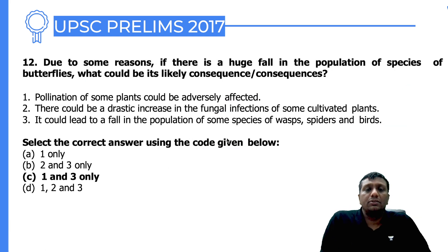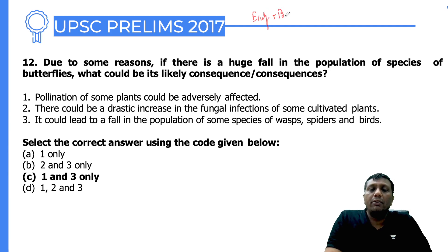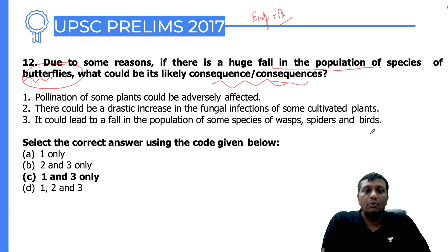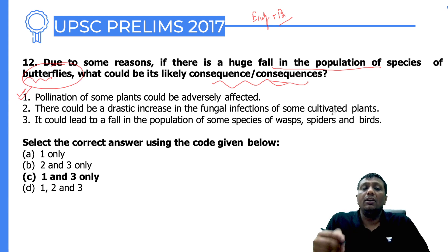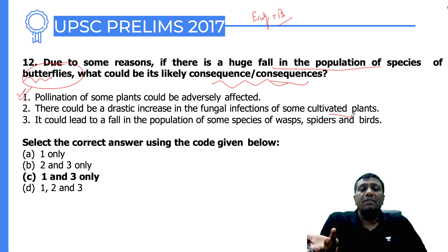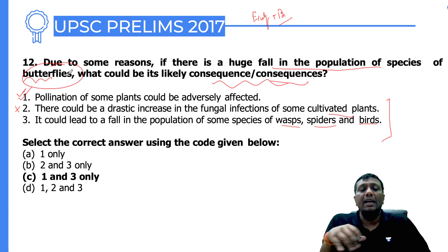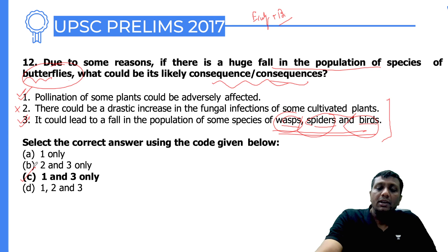Question twelve asks: if there is a huge fall in the butterfly population, what could be the consequences? First, pollination of some plants could be adversely affected since butterflies act as pollinating agents — this is correct. Second, a drastic increase in fungal infection of cultivated plants — this is totally wrong, as butterflies do not carry or spread fungi. Third, it could lead to a fall in the populations of certain species of wasps, spiders, and birds — this is correct, as reduced plant diversity affects other organisms in the food chain.